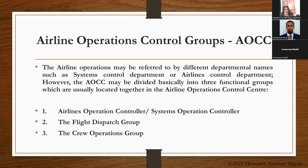The three functional groups of the AOCC are: one — airline operations control or systems operation controller; two — flight dispatch group; and three — crew operations group. Let us see the role played by each of these groups.